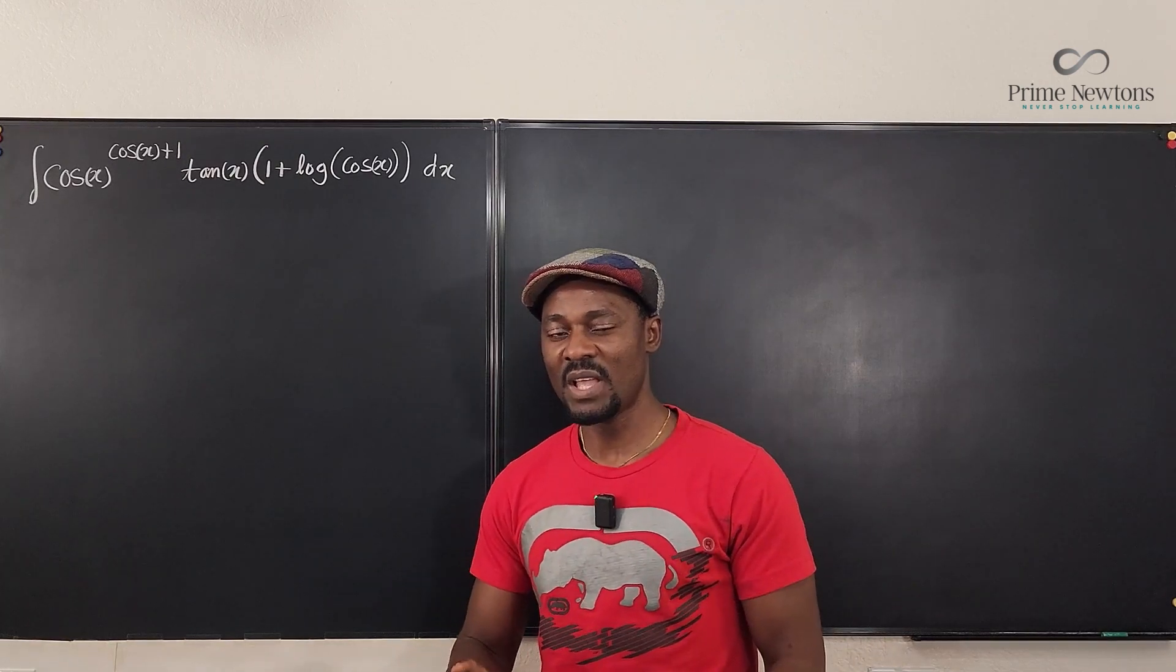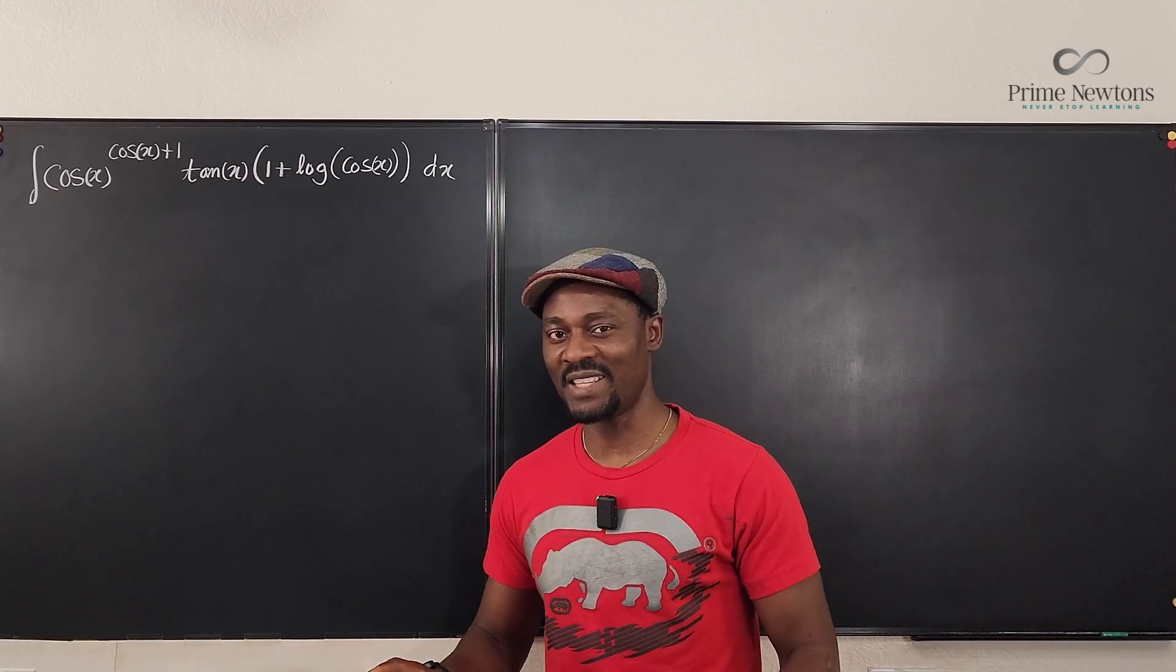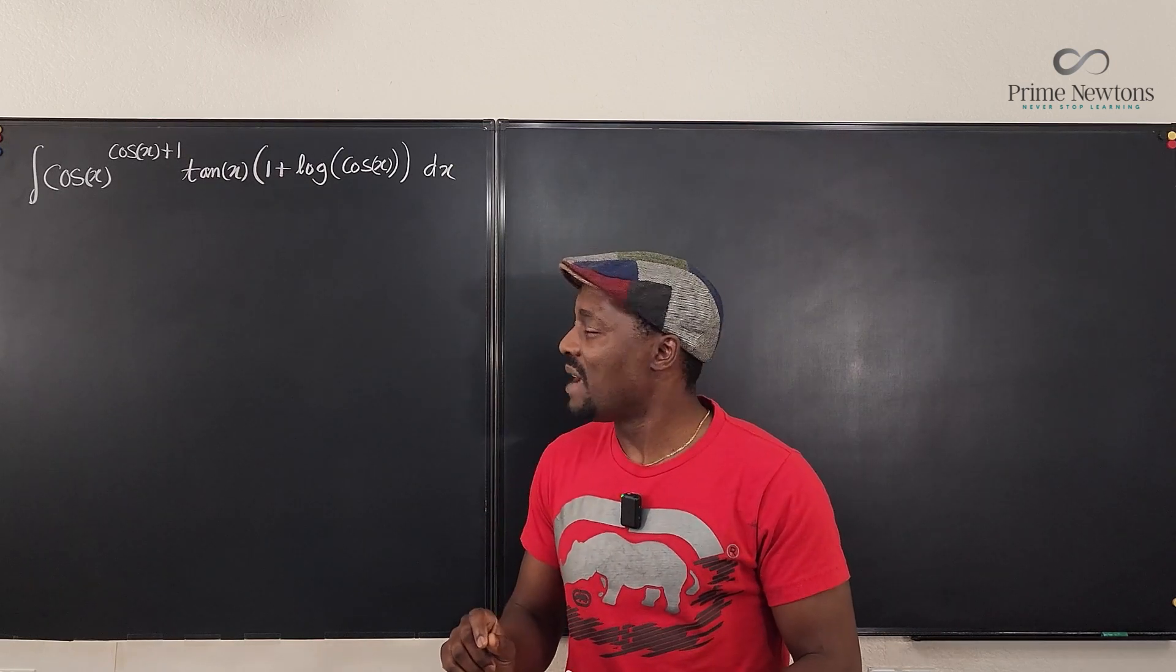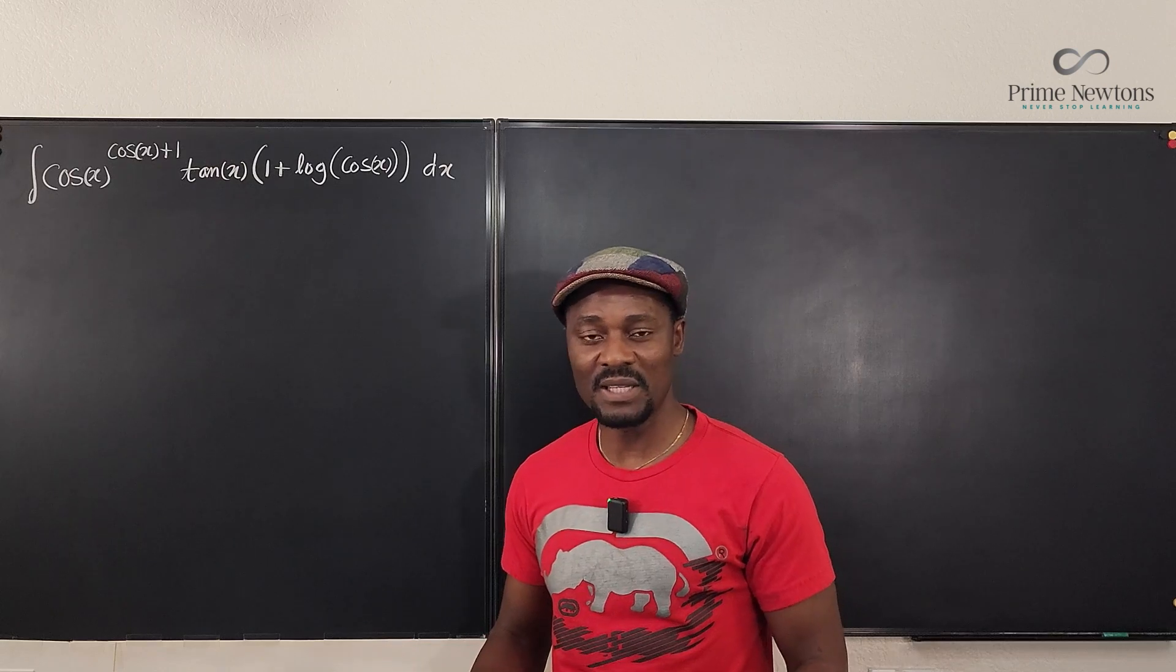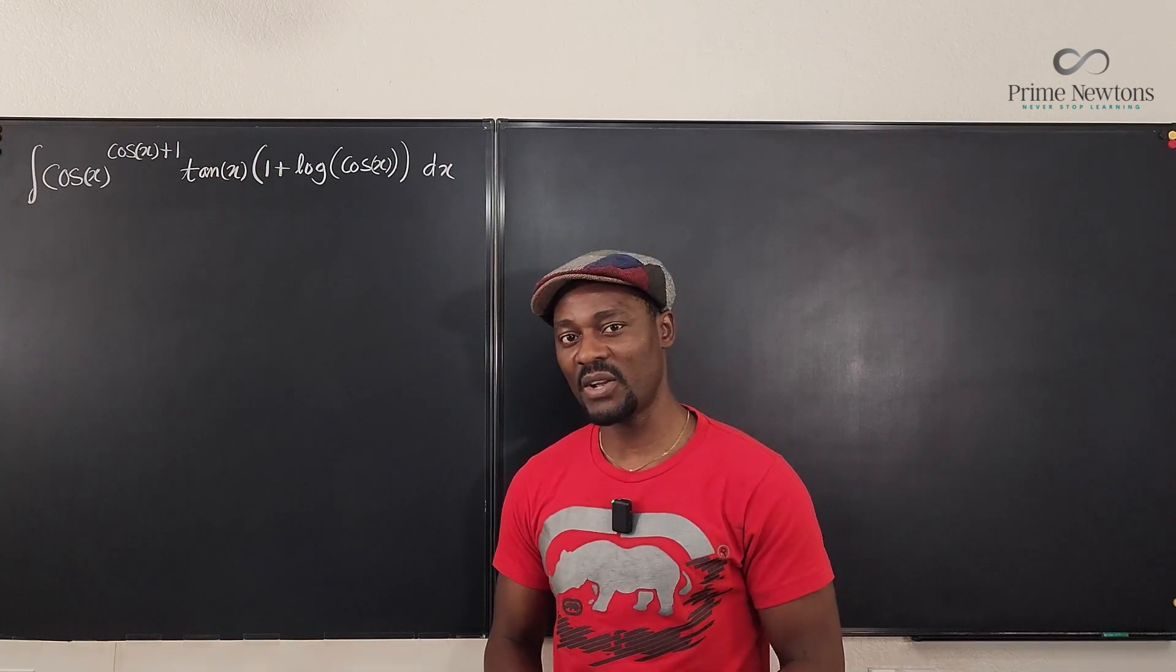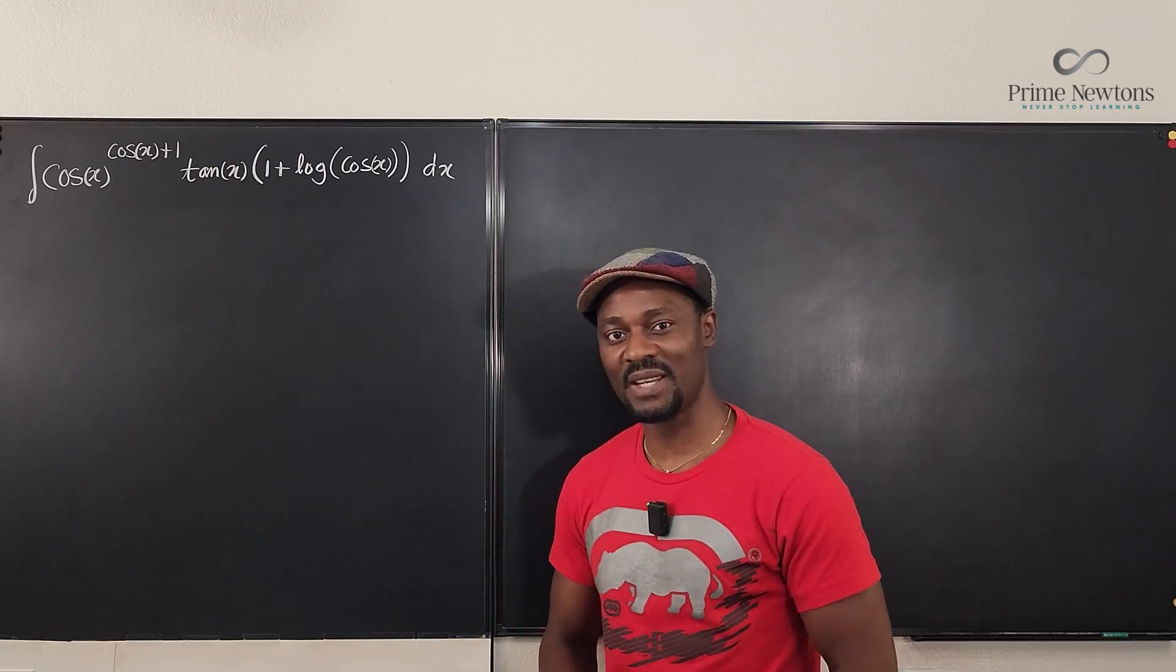That should be my u. I don't want to have too many cosine x's. So I'm going to make cosine x my u and then see what happens at the end of the day. And that's exactly what I did when I saw this. And it didn't take long before I got the answer. So let's get into the video.